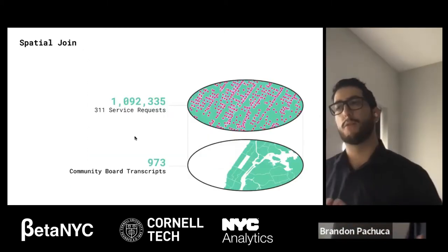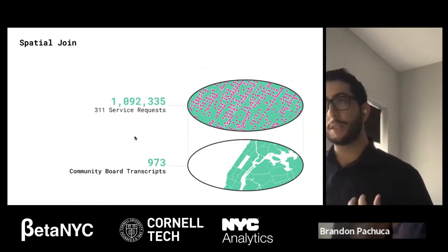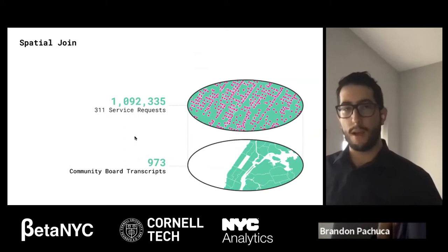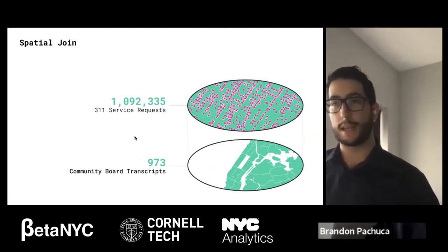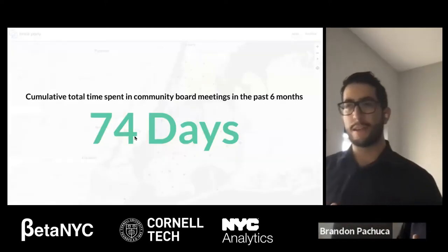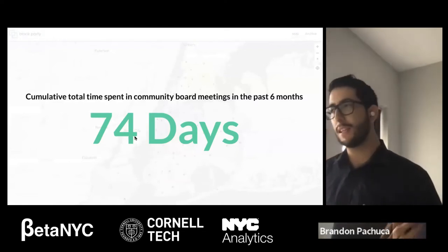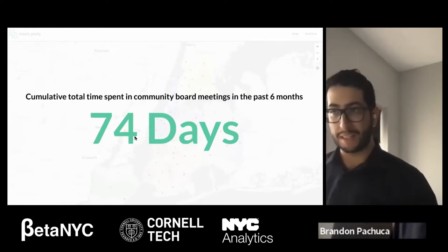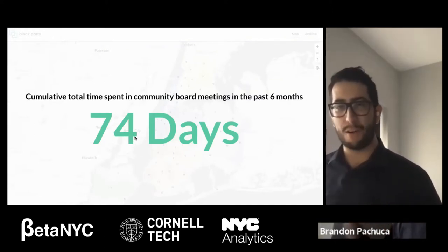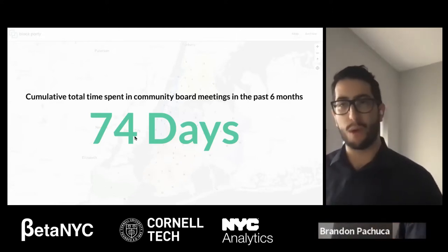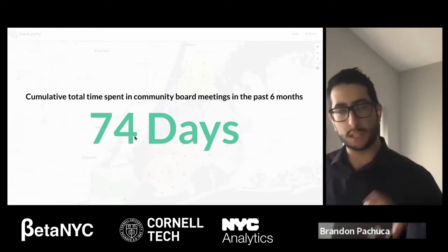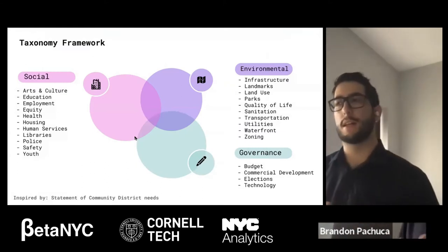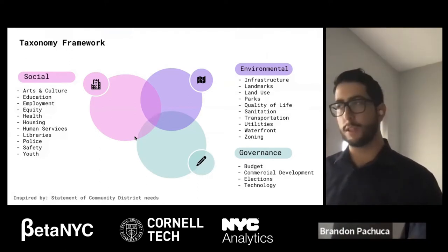By spatially joining the 311 service requests to community board transcript data, we can create a composite view enabling us to compare them against one another. We have around 1,031,000 service requests and 973 community board transcripts over the last six months joined together. The 973 community board transcripts we analyzed is approximately 1,779 hours — or 74 days worth of meetings. This is a lot of content to dig through to try to find what's a meaningful story.